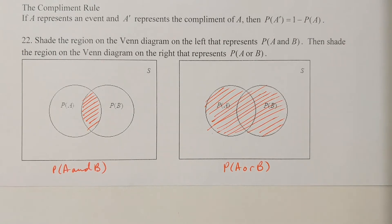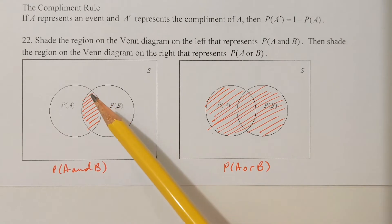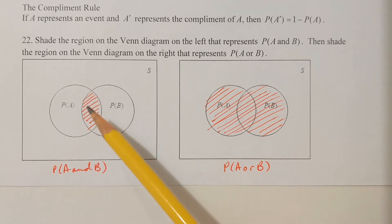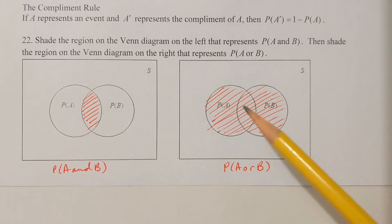Problem 22: shade the region on the Venn diagram on the left that represents the probability of A and B, then shade the region on the right that represents the probability of A or B. In chapter 2, we worked with 'and' and 'or' as keywords in set theory — same thing here in probability. The probability of A and B is where A overlaps B. The probability of A or B includes everything in A, everything in B, and everything in A and B.